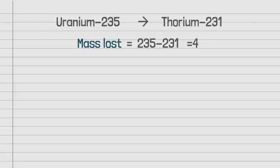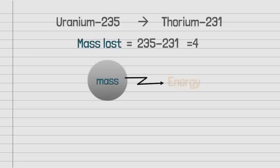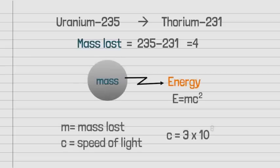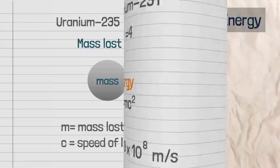But in some cases the mass of the reactants is not equal to the mass of the products. Uranium, which has an atomic mass of 235, changes to thorium with a mass of 231. There is a loss of 4 units of mass. This lost mass converts to energy, and the value of energy equals mc², where m is the mass lost and c is the speed of light, equal to 3 × 10⁸ meters per second.